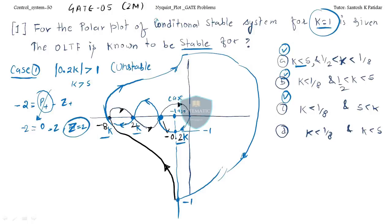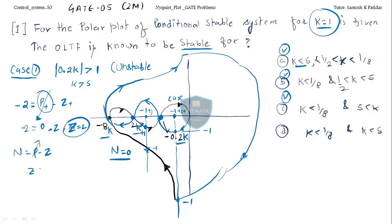Now let's find out for the region where minus 1 plus j0 is between the values. In this region, the encirclement is 0. So N = P minus Z, with P = 0 gives Z = 0 — no closed loop poles outside the imaginary axis, meaning no closed loop poles in the RHP of the s-plane. So this region will definitely be stable.